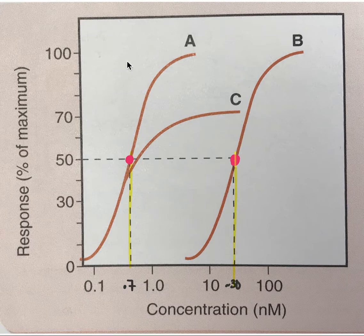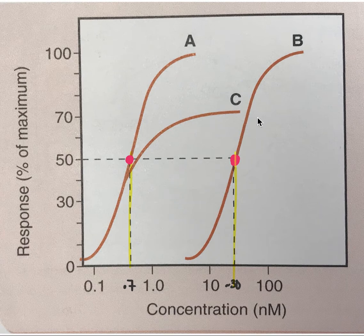So A and B, you can say that they have the same efficacy because their maximum response is the same. C has a maximum response of 70%, so you can say that C has less efficacy than A or B.